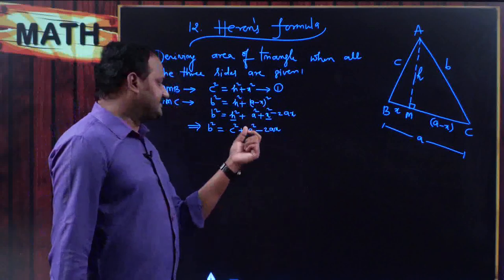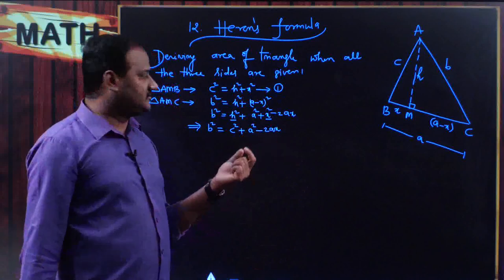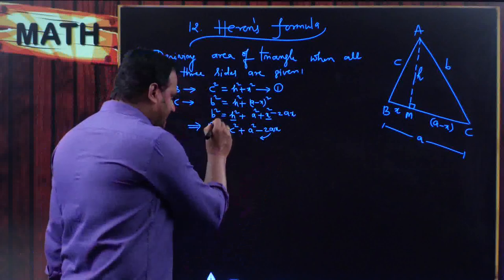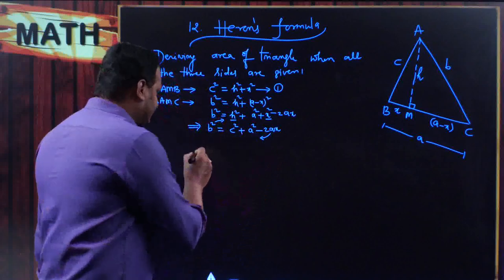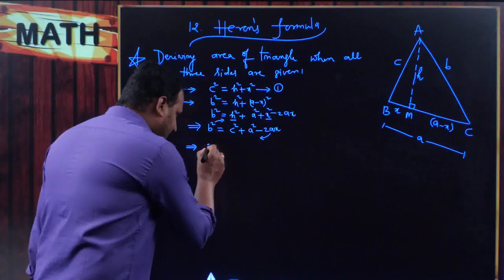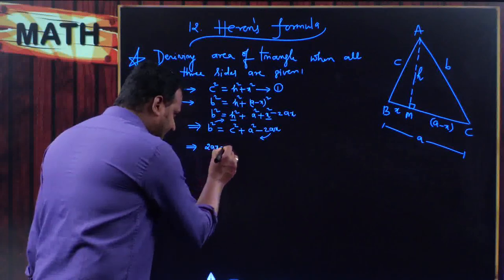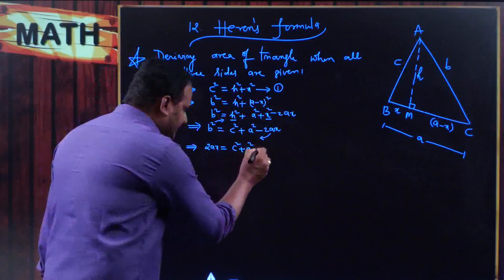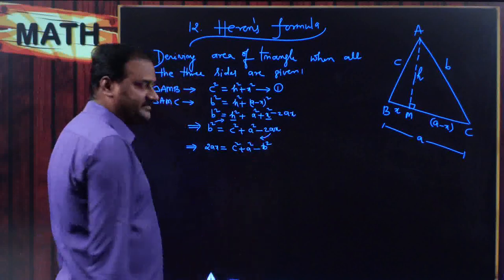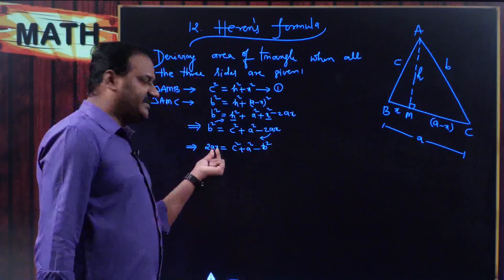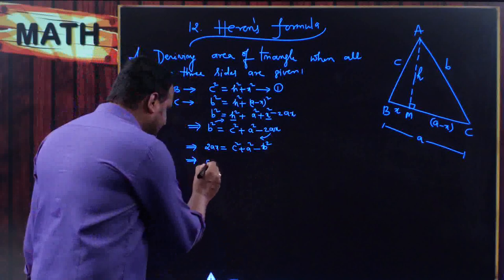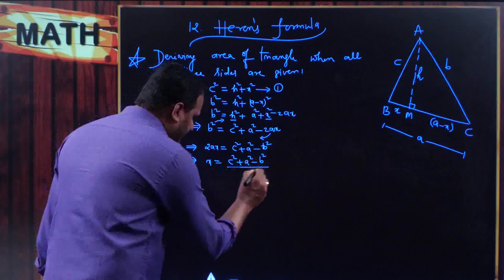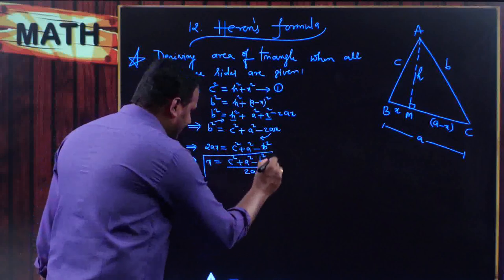In order to find the value of x, make 2ax the subject. Transposing 2ax to the left and b² to the right: 2ax = c² + a² − b². Therefore, the value of x is equal to (c² + a² − b²) divided by 2a.